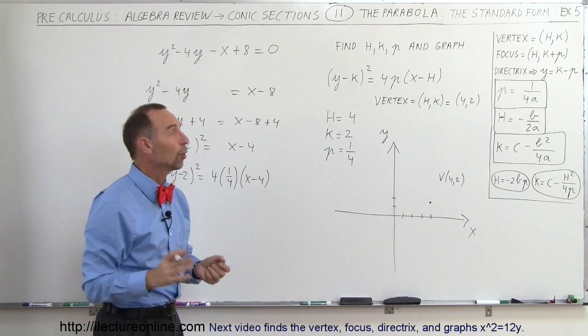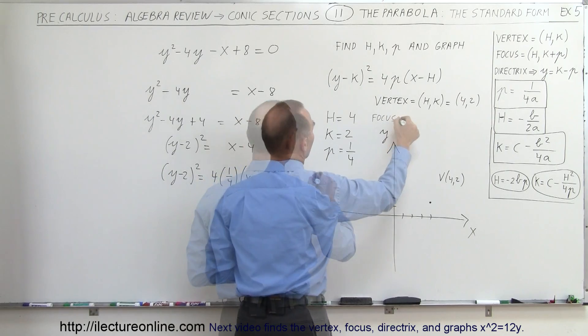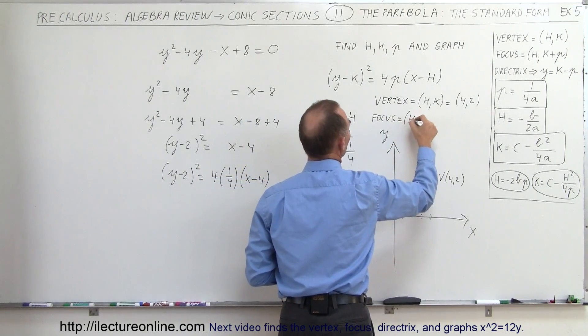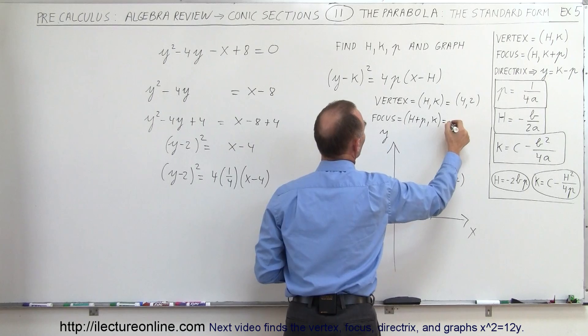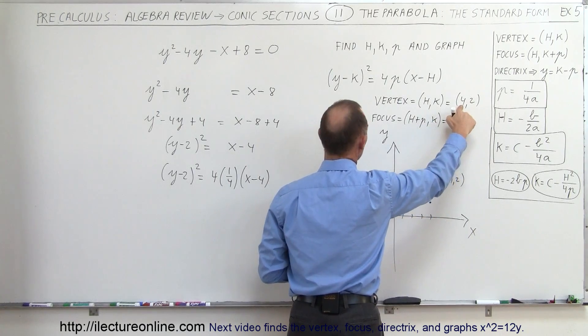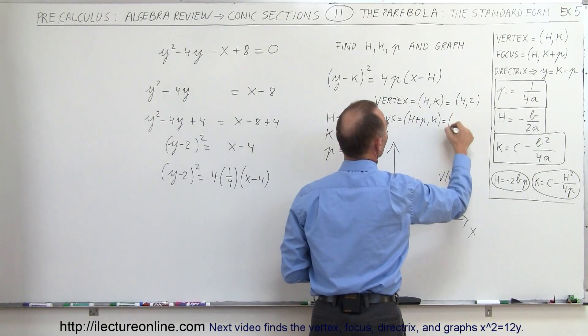All right, now we want to find the focus. Now the focus is going to be equal to (h + p, k). So that would be h + p. h is 4, p is a quarter, that would be 4 and a quarter.